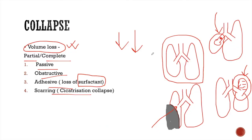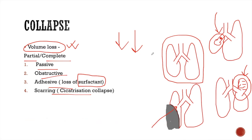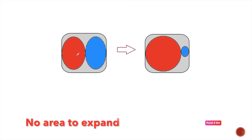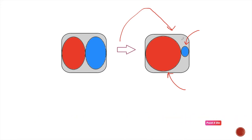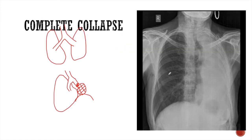Similarly, surfactant reduces surface tension in our lungs and helps them expand. With loss of surfactant, the surface tension is increased and the lung collapses. To understand how lung collapses, imagine you have two spherical balloons in a closed jar compressed against each other with no surrounding area to expand. When you remove air from the blue balloon, it decreases in size and the red balloon expands. When the air from the lung goes away, the volume of the lung decreases and the other side expands.